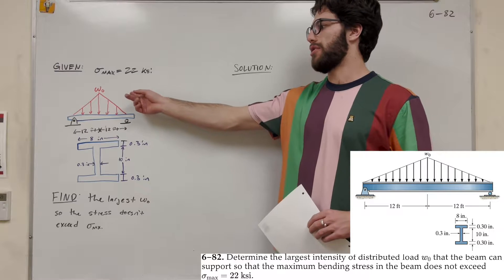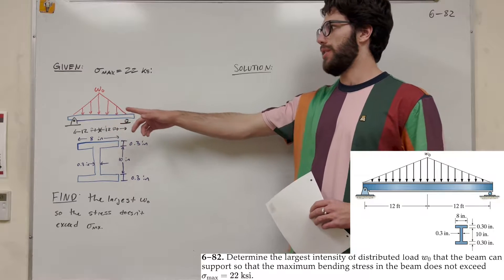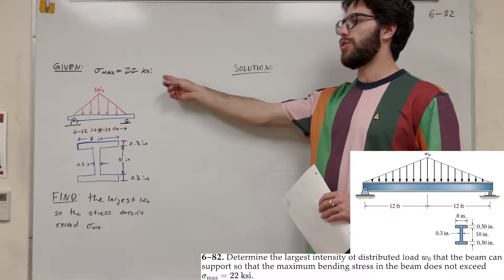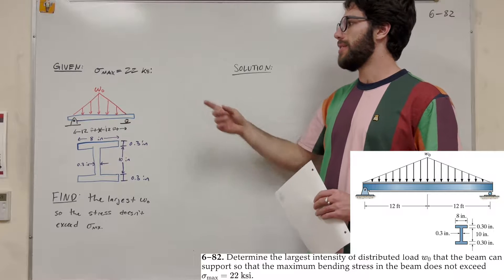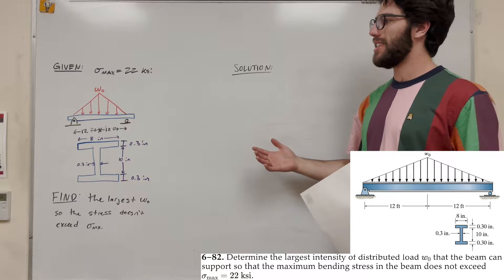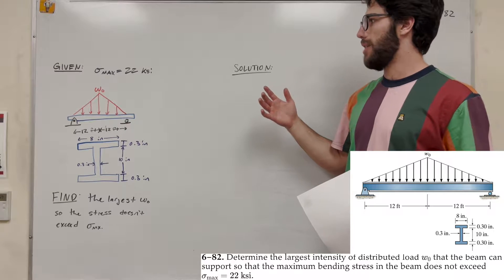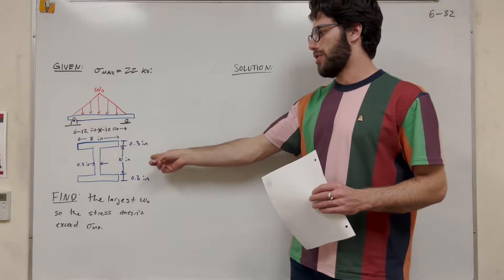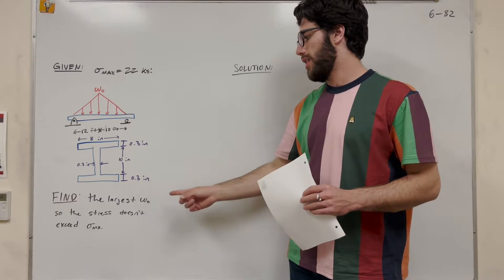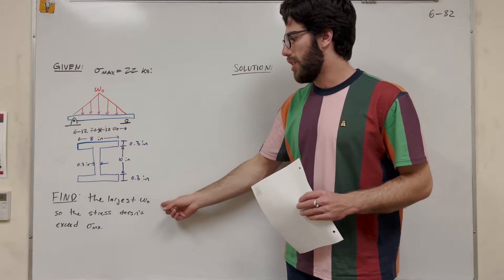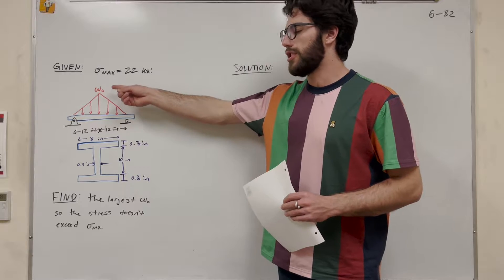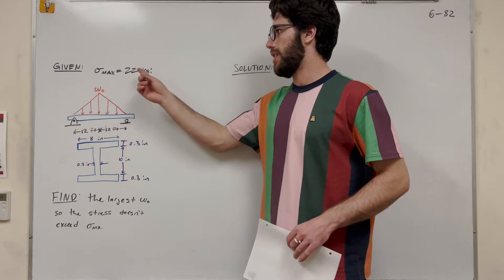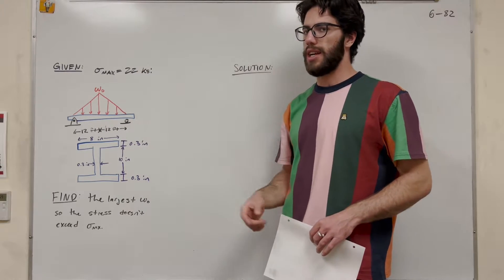We're given this beam with a distributed triangle load, and we're given that our max bending stress is 22 ksi. We're also given the cross-section of it, and we want to find the largest W-naught — the largest distributed load — so that the stress doesn't exceed 22 ksi.